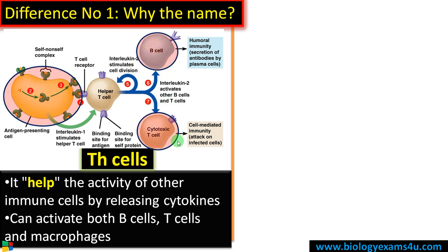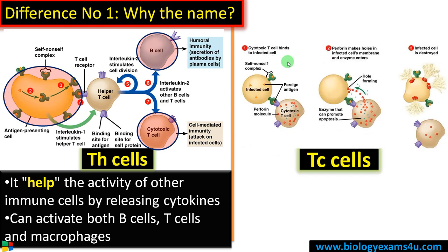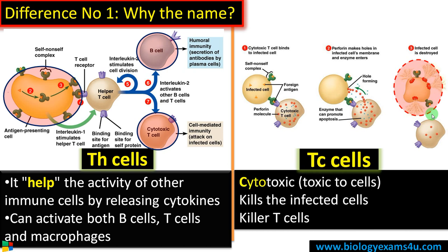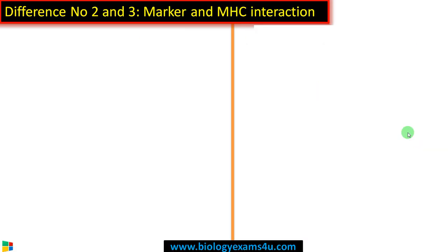As this T helper cell assists or helps all other cells during an immune response event, it is called a T helper cell. Now, T cytotoxic cells — cytotoxic T cells bind to infected cells and finally cause the destruction of the infected cell. That is why it is called cytotoxic, or toxic to infected cells, and therefore it is also called killer T cells or effector cells.